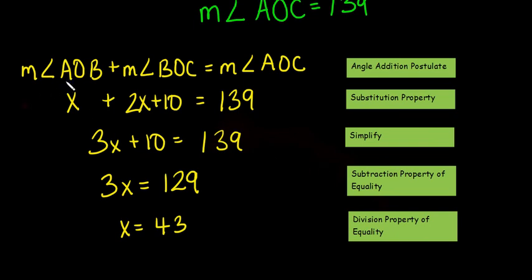The measure of angle AOB plus the measure of angle BOC equals the measure of angle AOC. And that is our angle addition postulate that we learned back in Chapter 1. This right here is our proof, what we're using to say this. x plus 2x plus 10 equals 139 is our substitution property. We substituted in those values for the angles. 3x plus 10 equals 139. We simplified.